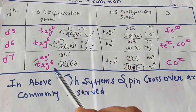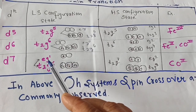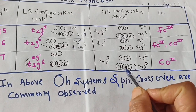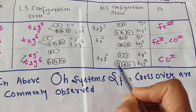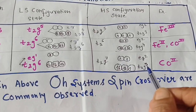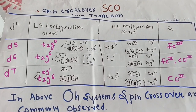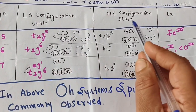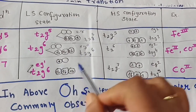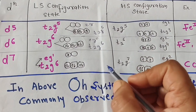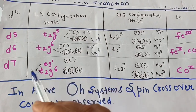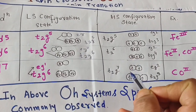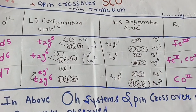In d7 high spin, four electrons are paired and three are unpaired. This is how electrons fill themselves in low spin versus high spin configurations. If a low spin configuration changes to high spin by altering temperature or pressure, that is termed spin crossover.